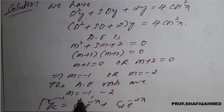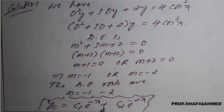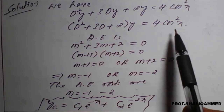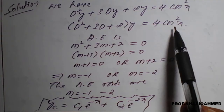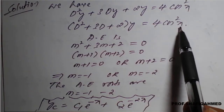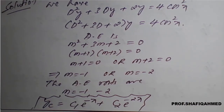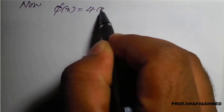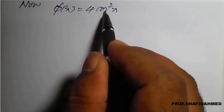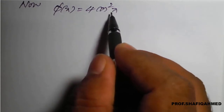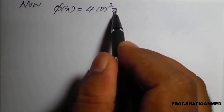This is the complementary function. With the help of this complementary function, we will go for the general solution. For the general solution of this non-homogeneous differential equation, we also need the particular integral. From the right-hand side, we go for the particular integral. Now, 4cos²x is the φ(x) value. But we do not have a type 2 formula in the form of cos²x — we have cos(ax) form.